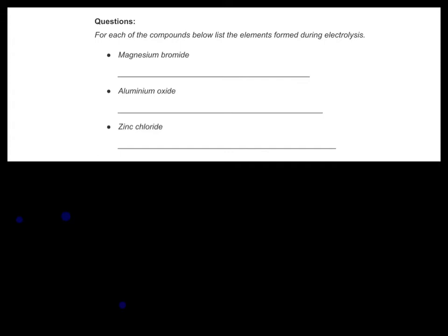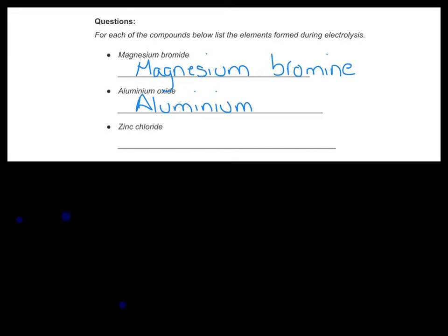So if you list with me: for the first one, magnesium bromide, as the name of the compound suggests, it will decompose once electrolyzed into the element magnesium — that's the metal — and also into the element bromine, that's the non-metal. Aluminium oxide will follow the same pattern, decomposing into aluminium and oxygen. And zinc chloride will decompose into the metal element zinc and the non-metal element chlorine.